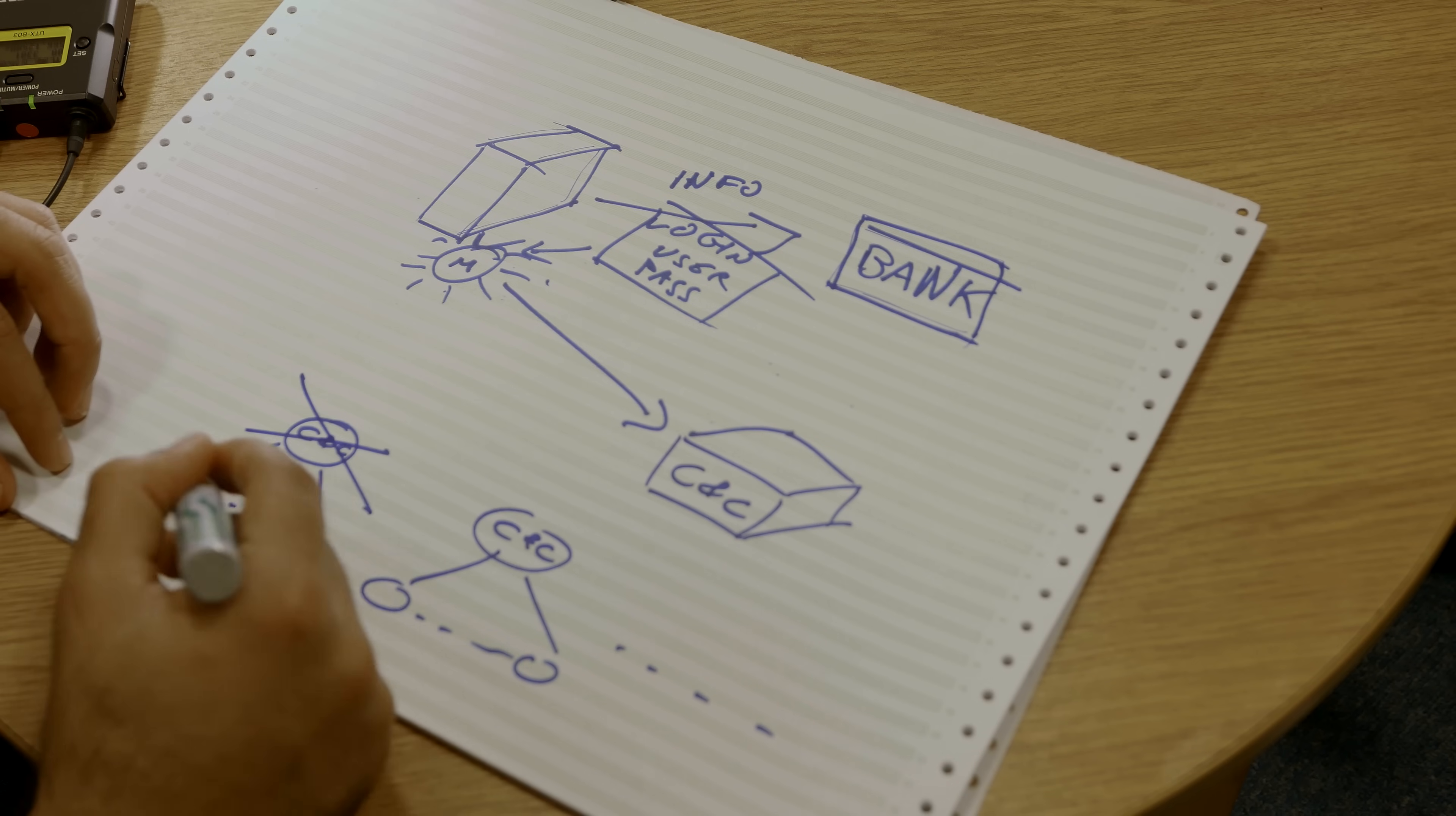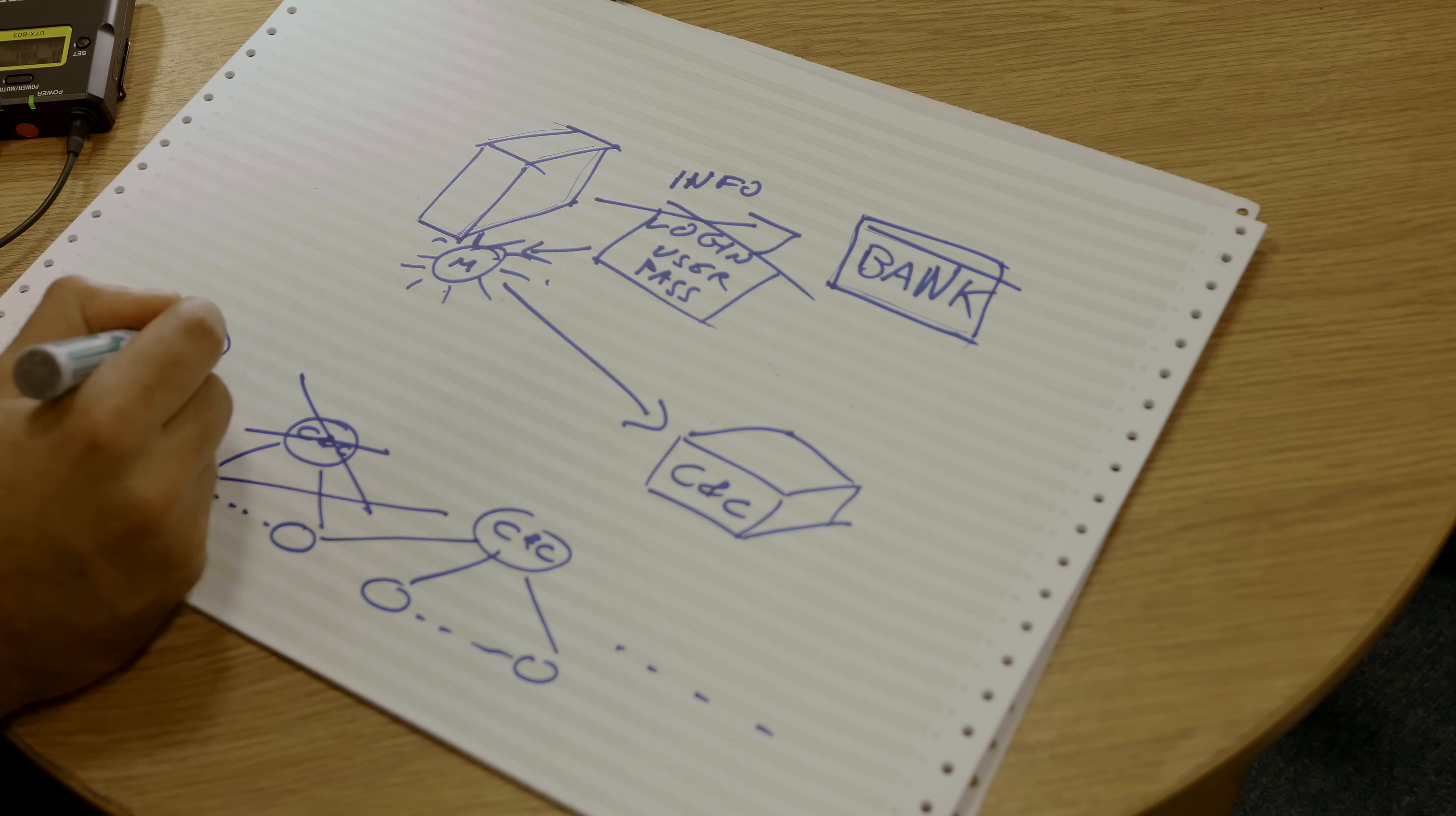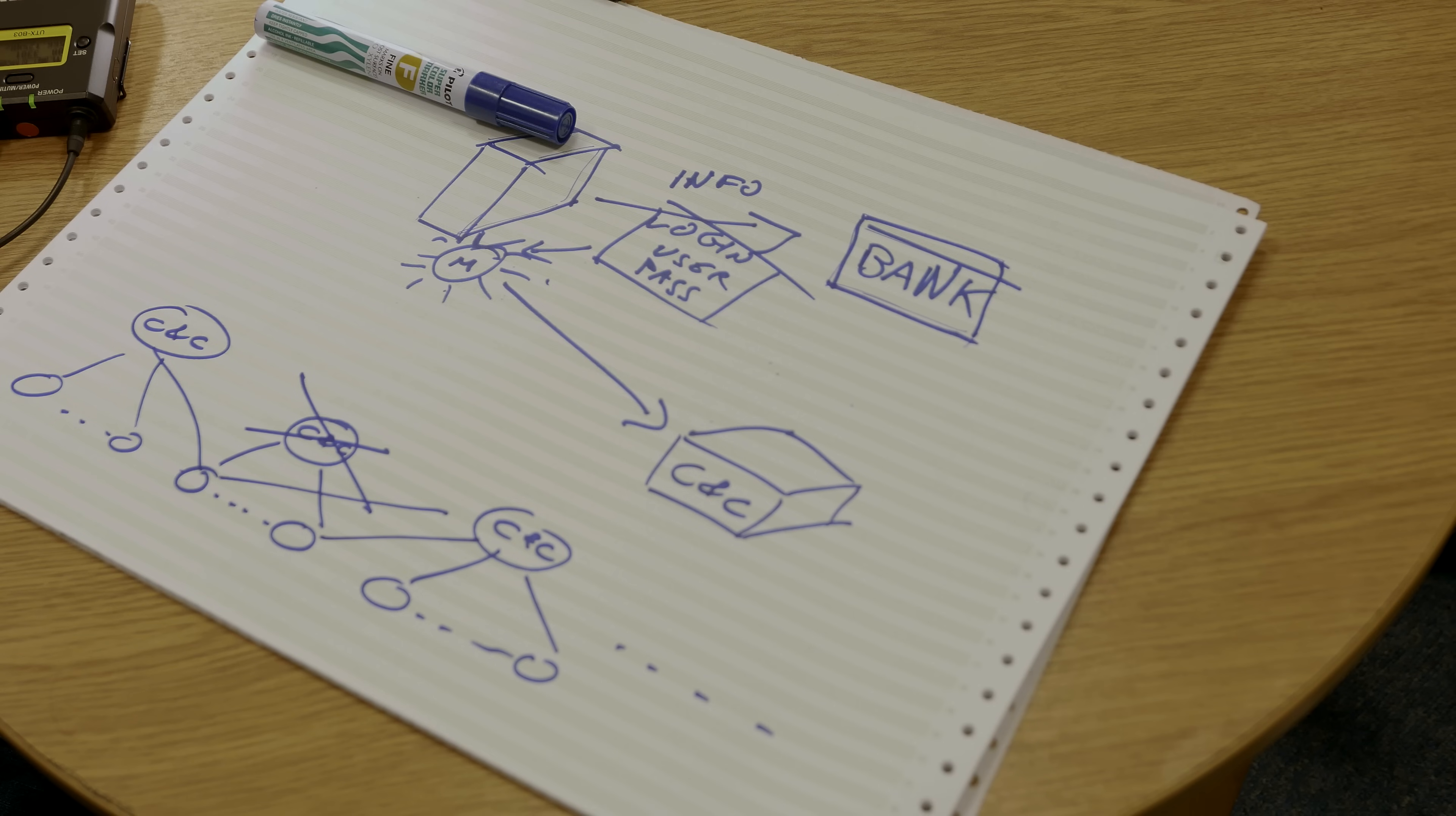Also, what can happen is that these bots that have been infected but cannot communicate here, they are going to try to communicate to another C&C that is here with other ones in order to redistribute the load. By having different command control servers, we have different little networks of infected machines that can be used in different ways.